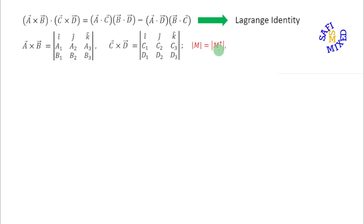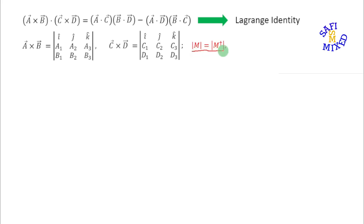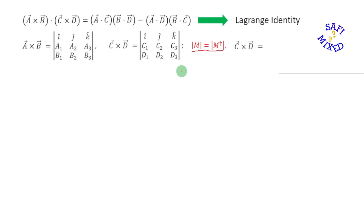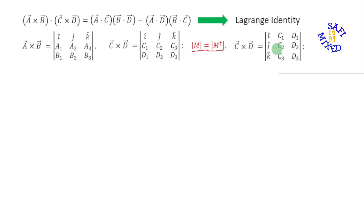Using this property of the determinant and its transpose, we can write the determinant of this matrix into its transposed form. That is, the vector product c cross d can also be written in transposed form. I convert the rows into columns of this determinant and can write it into this form.